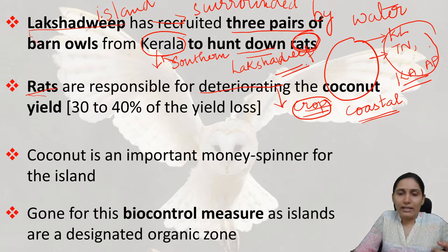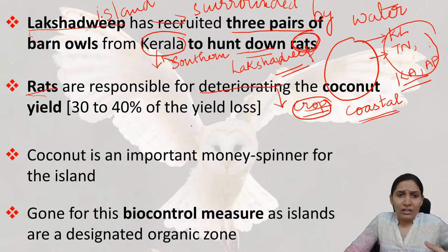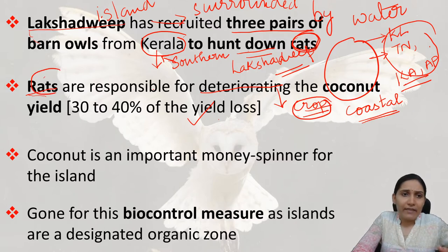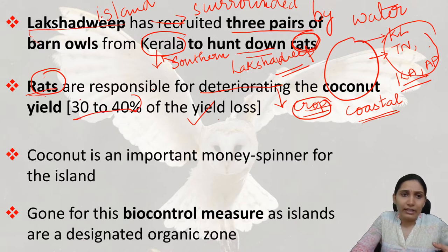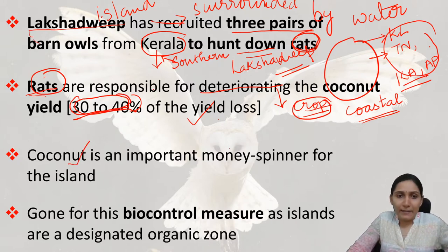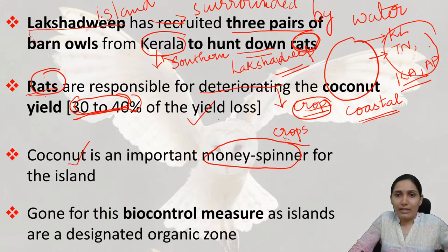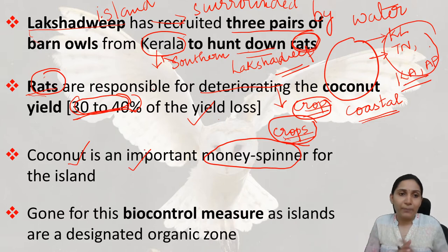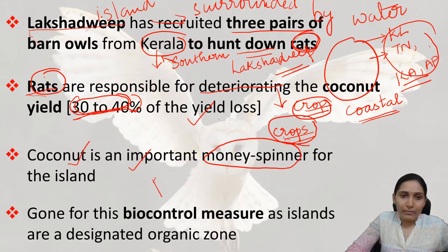Similarly, Lakshadweep is also a coastal economy with a large number of coconut trees. These rats were responsible for deteriorating the coconut yield — about 30 to 40 percent of the yield loss was seen due to the presence of these rats. Since coconut is an important money spinner for the island economy in Lakshadweep, it is one of the major sources of revenue for cultivators there.